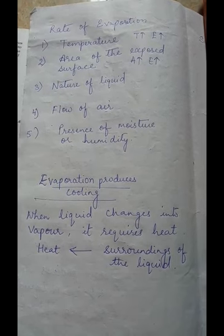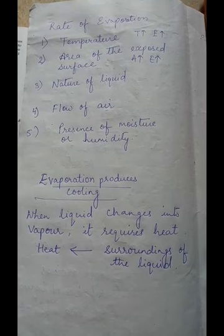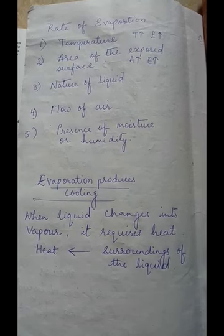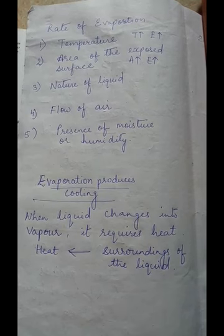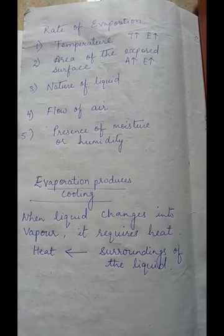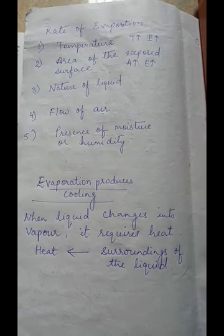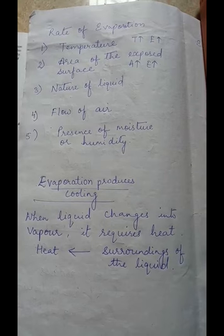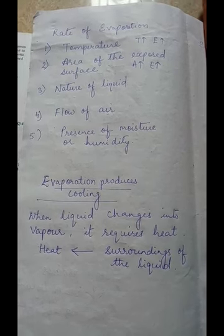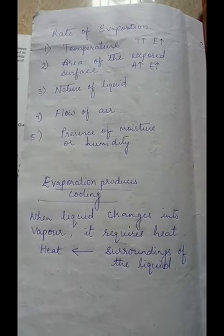The next factor is the area of the exposed surface. When you dry a cloth, it dries up faster if it is spread out instead of being folded up. The rate of evaporation increases as the area of the surface exposed increases.